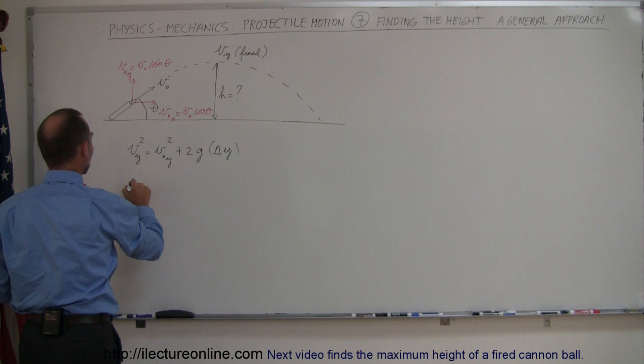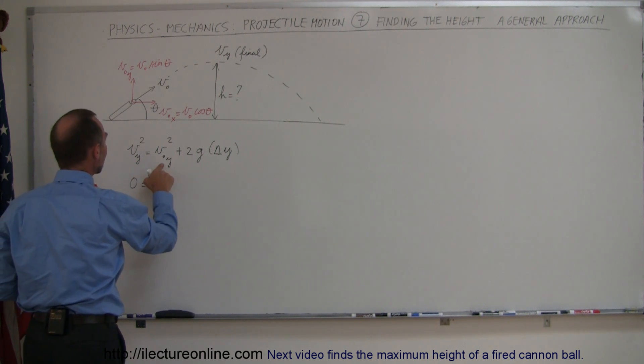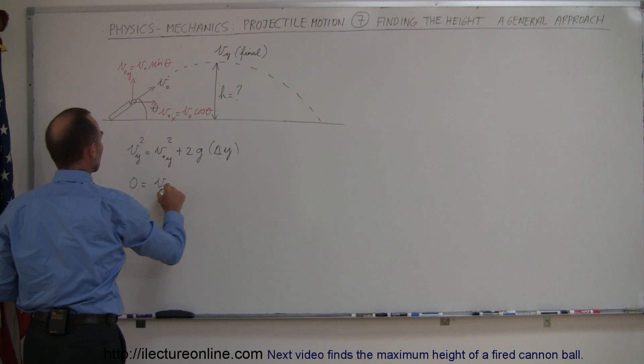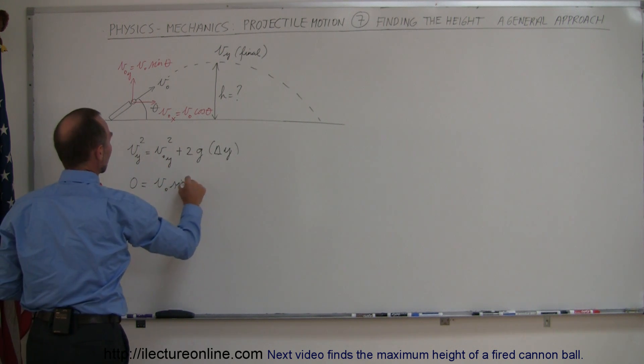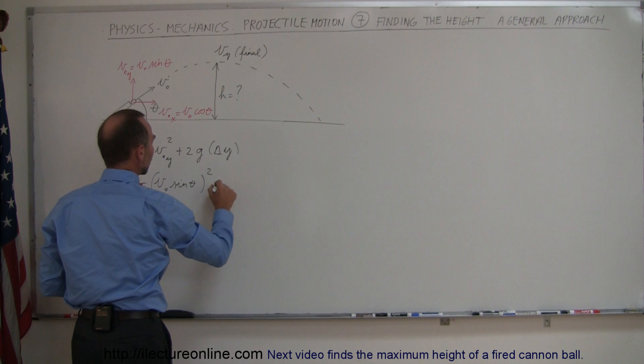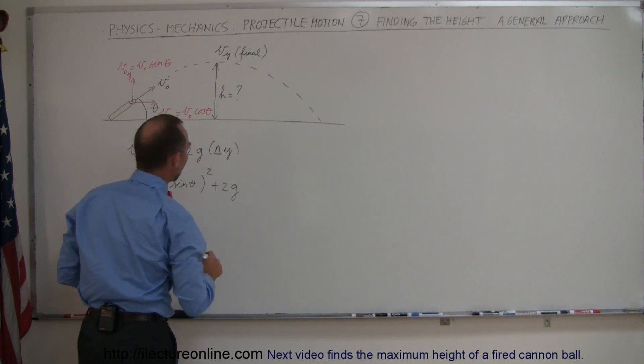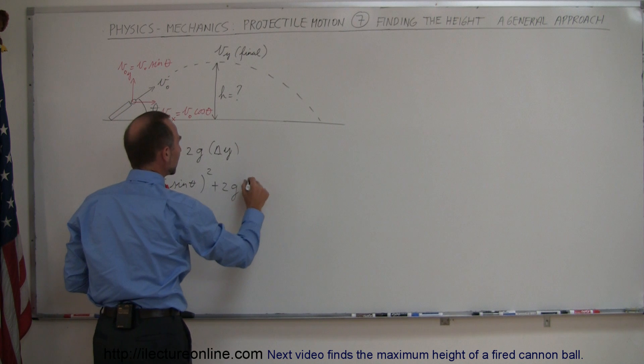So plugging that in here we get zero equals the initial velocity in the y direction squared, of course that would be this right here, that would be v initial times the sine of theta quantity squared, plus 2 times g, which is, we'll just leave it as g, times the change in y, which would be the height h.